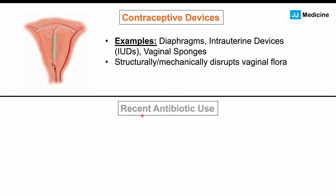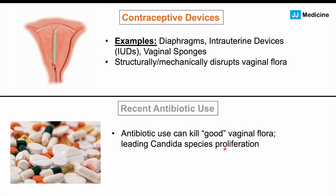Another important risk factor is recent antibiotic use. Antibiotic use can kill off the good vaginal flora. There are many different species within the vaginal cavity that keep other microbes in check. Broad-spectrum antibiotics — those that cover many different bacterial species — can kill off good bacteria within the vaginal cavity, leaving the fungal species candida in their place, giving it fewer competitors and allowing it to proliferate and cause an infection. Amoxicillin is particularly notorious for this. It has been estimated that one-quarter to one-third of female patients get a yeast infection after recent use of broad-spectrum antibiotics.